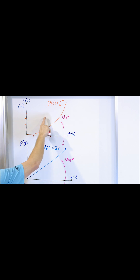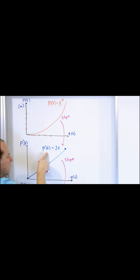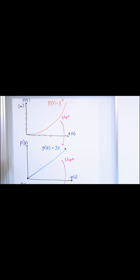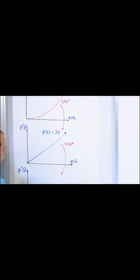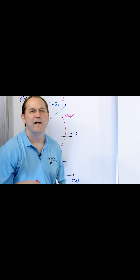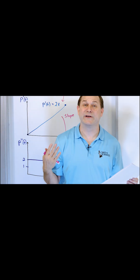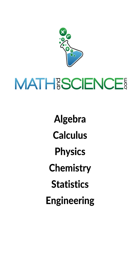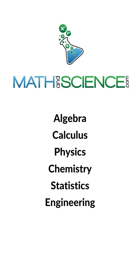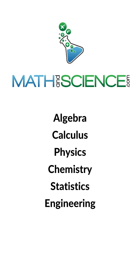So if the derivative of position is velocity, if you take the derivative again and look at how this thing is changing — the velocity is changing — what do you think this graph is going to be called? That one's going to be called acceleration. Learn anything at MathAndScience.com.